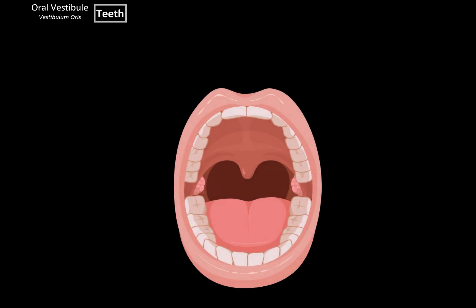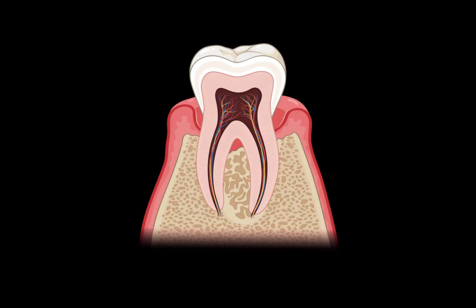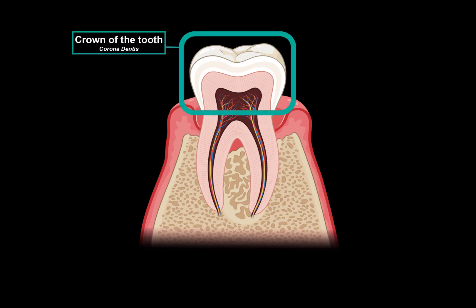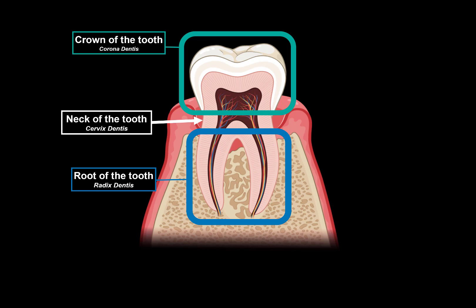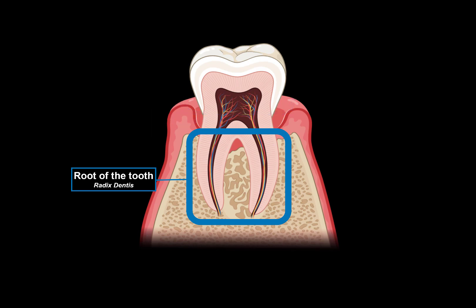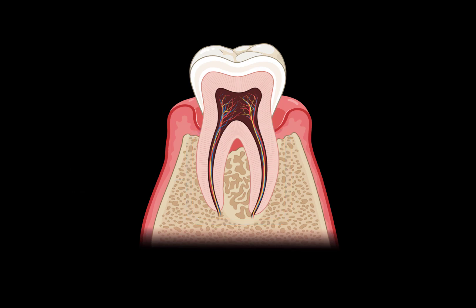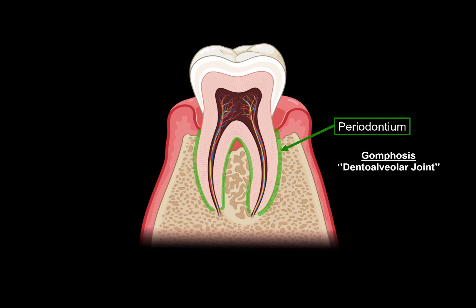Now let's cover the inner surface of the oral vestibule and start with the anatomy of the teeth. The tooth has a very straightforward anatomical structure, divided into three regions. First, we have the crown of the tooth, which is the visible part. Then we have the root of the tooth, which is embedded in the dental alveolus. And between these two parts is a neck, which is the transition between the crown and the root. The neck is covered by the gums. The root of the tooth is fixated inside the dental alveolus, and this fixation is supported by something we call the periodontium, which forms the so-called gomphosis — a very strong fibrous connection between the root of the tooth and the periosteum on the inner surface of the dental alveolus. The gomphosis is a type of joint we call the dental alveolar joint.